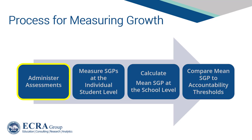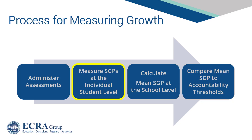The process for measuring student growth via student growth percentiles starts with administering assessments. Initially, growth will be measured using PARCC scores in grades 3 through 8, but will evolve as ISBE adopts a new assessment system. In the future, growth will likely be expanded to the high school level using the SAT suite of assessments. Once student-level assessment scores are produced, the process is focused on connecting individual student assessment scores over time to quantify the growth that has occurred. This is where student growth percentiles comes in.